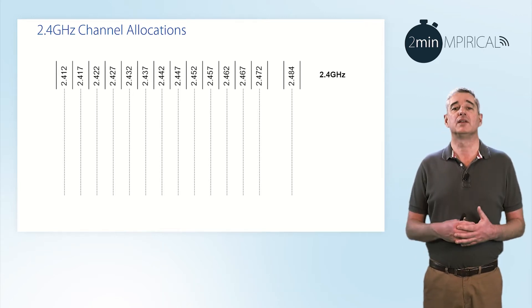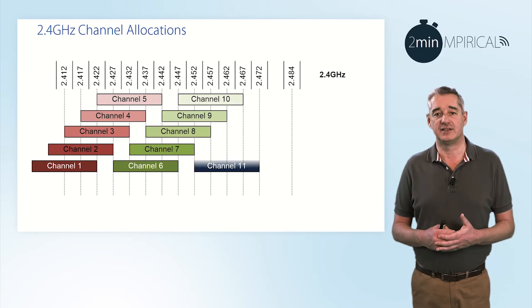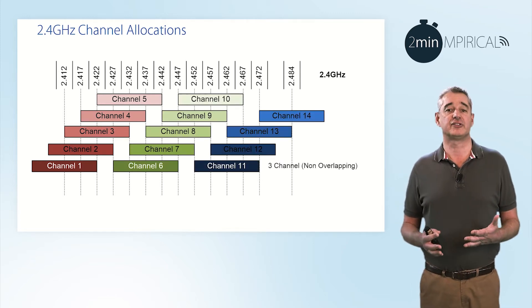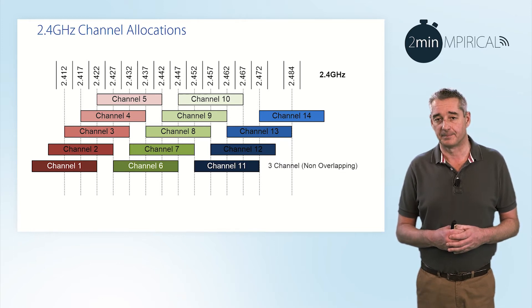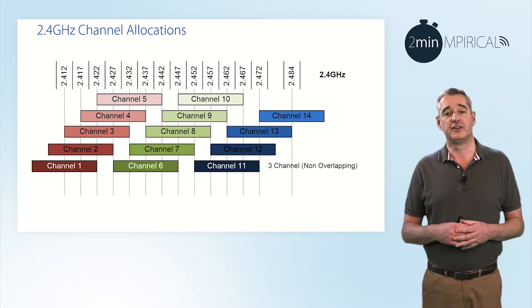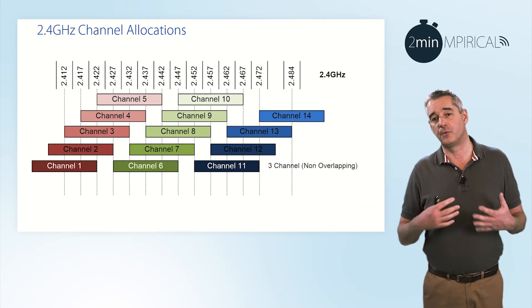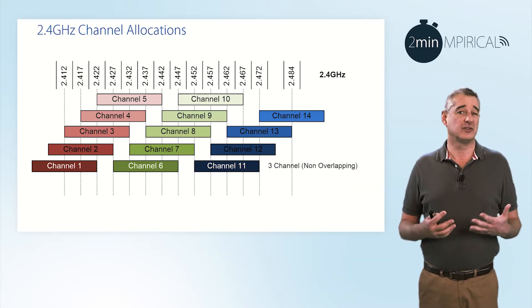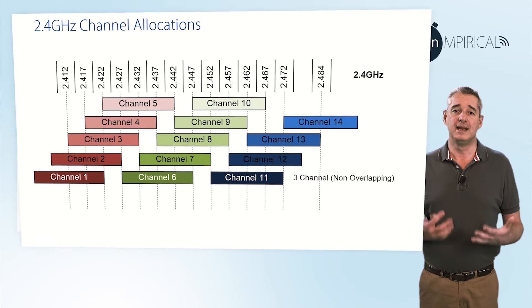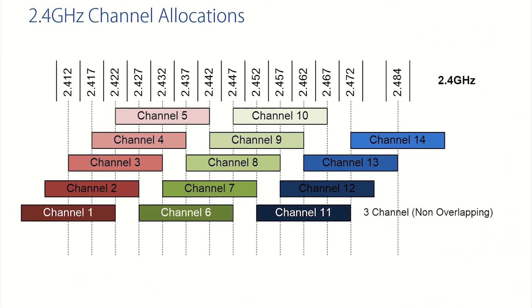We can see that different channels are allocated to Wi-Fi, in this case channels which are 20 MHz wide. Therefore, across the entire 2.4 GHz area, we can see that we can have a total of 14 different channels. However, what's important is that access points which are next to each other should be operating on a different, non-overlapping channel. As such, realistically the channels we will typically find will be limited to channel 1, channel 6, and channel 11.